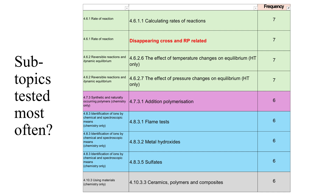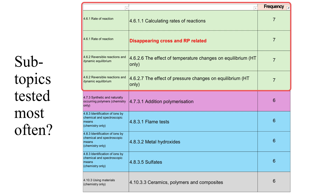It's worth identifying which of the 60 subtopics are tested every year. Four subtopics — all from within topic six, the rate and extent of chemical change — have been assessed every single year. There are five others assessed six years out of seven. This gives us another way to prioritise revision based on those nine subtopics out of 60.